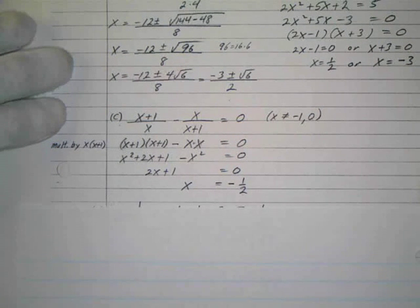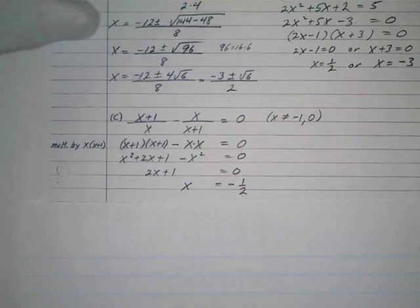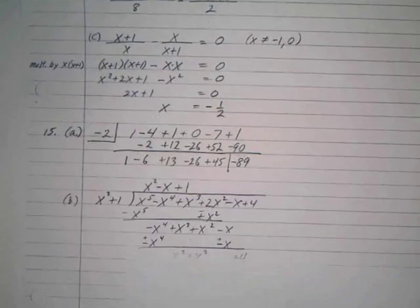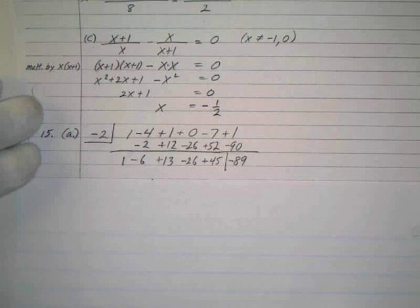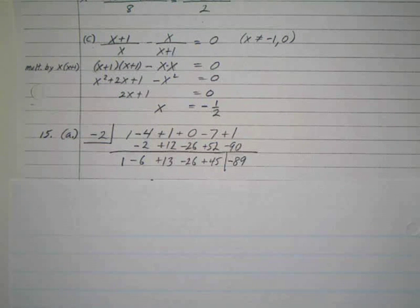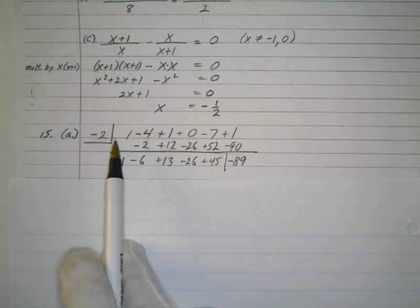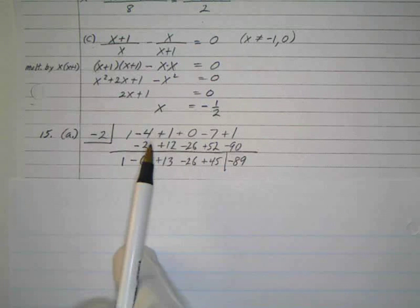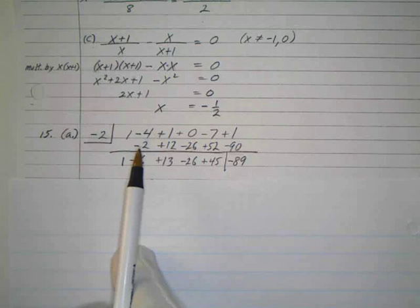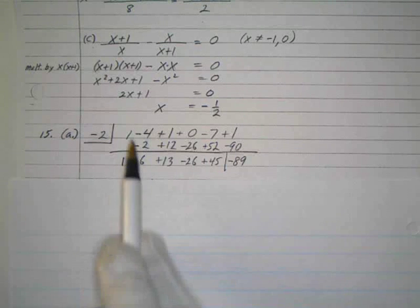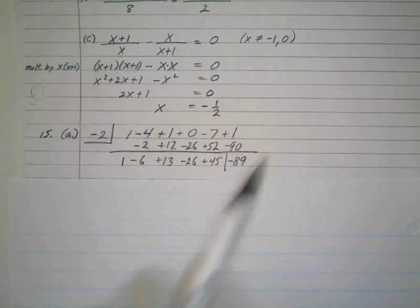And then number 15, they just wanted us to find the remainders. Okay, by dividing, find the remainders. Well, in this case, we can use the remainder theorem. We can use synthetic division for the first one. If you look at your problem, you were dividing x to the fifth minus 4x to the fourth plus x to the third minus 7x plus 1 by x plus 2. So I just put my coefficients there and I use synthetic division.